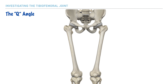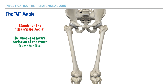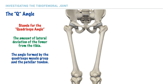As we continue investigating the knee joint, we'll notice that the femur projects downward at a slanted angle to meet with the tibia. Because of this, the medial condyle of the femur is slightly larger than the lateral condyle. This anatomical alignment is referred to as the Q-angle, which stands for the quadriceps angle, and represents the amount of lateral deviation of the femur from the tibia. Alternatively, it is the angle formed by the quadriceps muscle group and the patellar tendon.